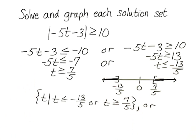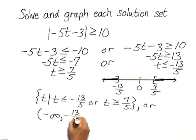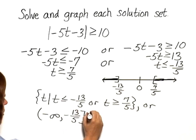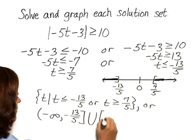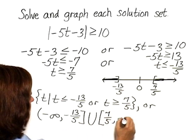Or I can also write that in interval notation as the interval from negative infinity to negative 13 fifths, union the interval from 7 fifths to infinity.